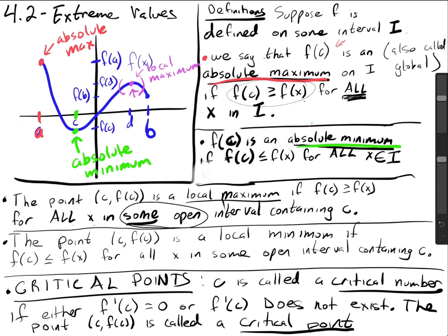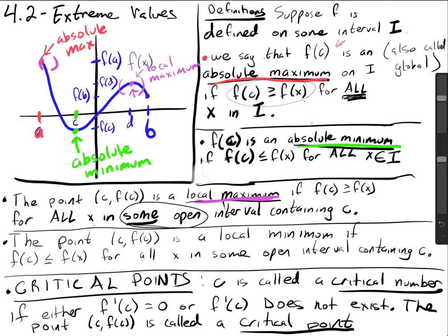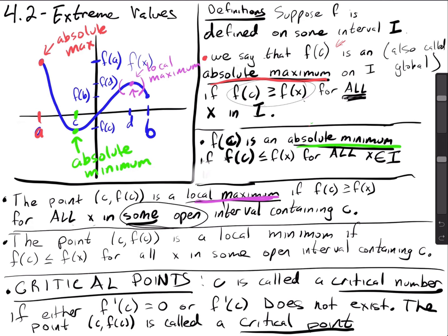Do we have any other local maximums, or is that the only one? What about point a — is it a local maximum? It actually is not. Endpoints cannot be local maximums because you can't make an open interval around them. If you try to make an open interval right there, it doesn't contain a. So it has to contain a and has to be open, but that's not actually possible. So endpoints cannot be local maximums or minimums. But notice, an endpoint can be an absolute maximum or minimum — that's a key difference.